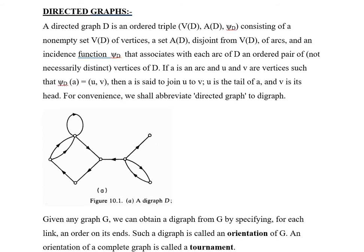a and v is its head. For convenience, we shall abbreviate 'directed graph' to 'digraph'. The figure given here as figure 10.1 is an example of a digraph D. Given any graph G, we can obtain a digraph from the graph G by specifying for each link an order on its ends.